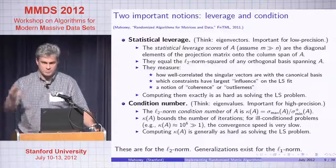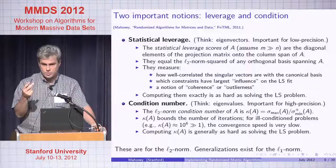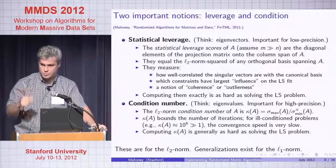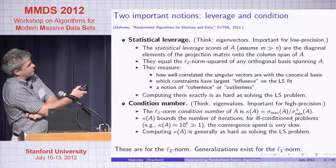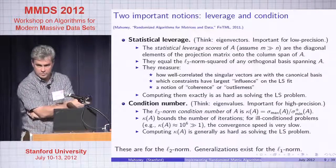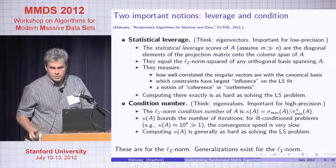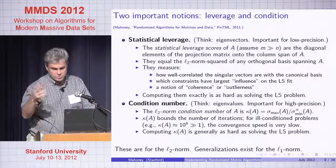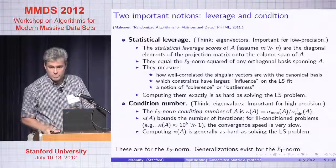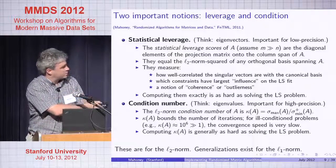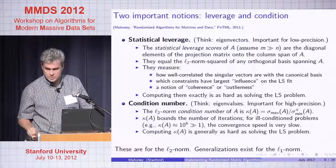Two important high-level notions, instantiated differently depending on whether you care about worst-case theory, high-precision RAM implementations, or parallel/distributed settings. First is statistical leverage — think eigenvectors. Second is condition number — think eigenvalues. If you want a low-precision answer with epsilon around 0.1, you need to identify the leverage structure of the data. If you want to iterate to high precision, you need to find the condition number properties.